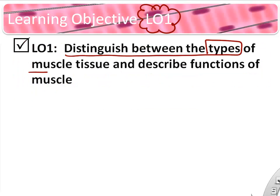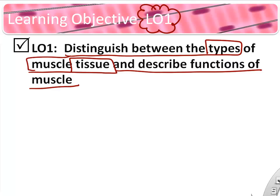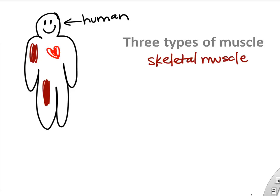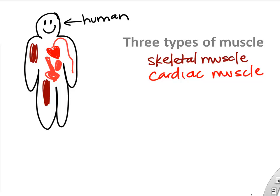First, we're going to distinguish between the types of muscle we see in the body. There are three different types of muscle tissue and muscle cells: skeletal muscle, cardiac muscle, and smooth muscle. Smooth muscle is usually found in our hollow organs like our stomach, bladder, and blood vessels.